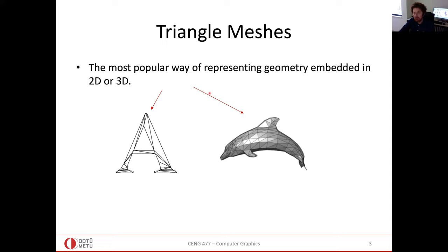That is the reason we like triangle meshes. Using the barycentric coordinates defined for triangles, we can interpolate any value on the triangle vertices inside of the triangle. In general these values are the color RGB values, but it can be any value.